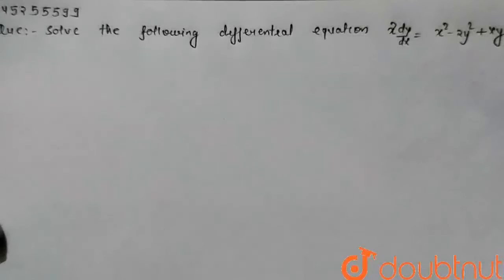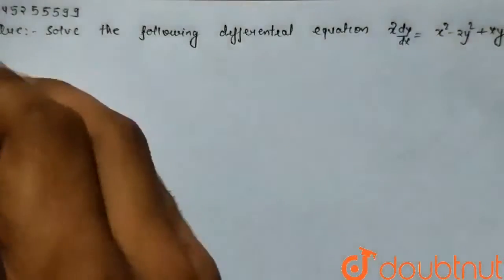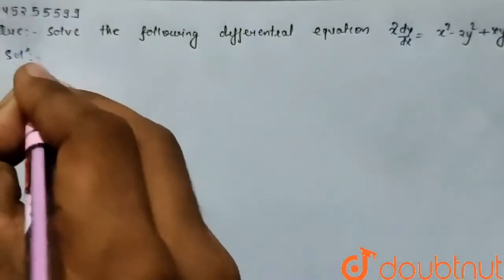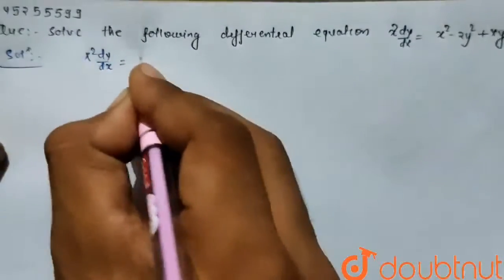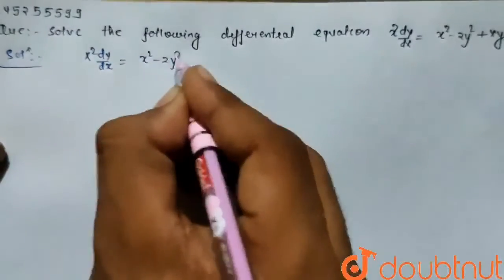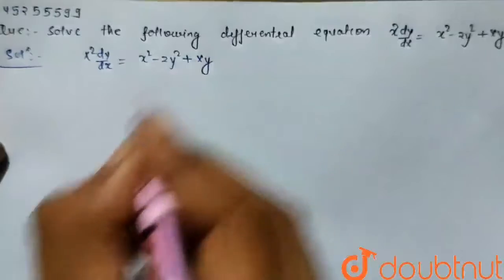Everyone, in this question, solve the following differential equation: x squared dy by dx equals x squared minus 2y squared plus xy. So in solution part, the given differential equation x squared dy by dx equals x squared minus 2y squared plus xy.